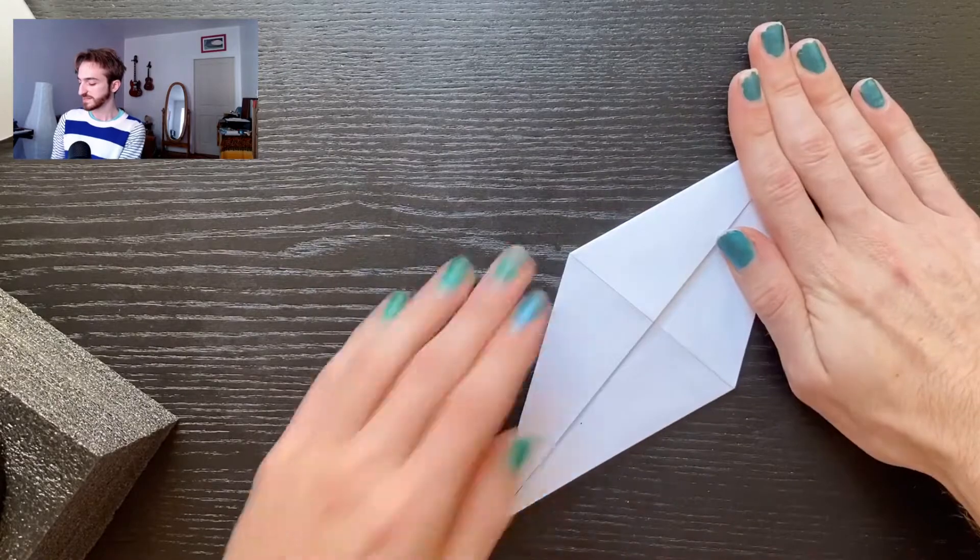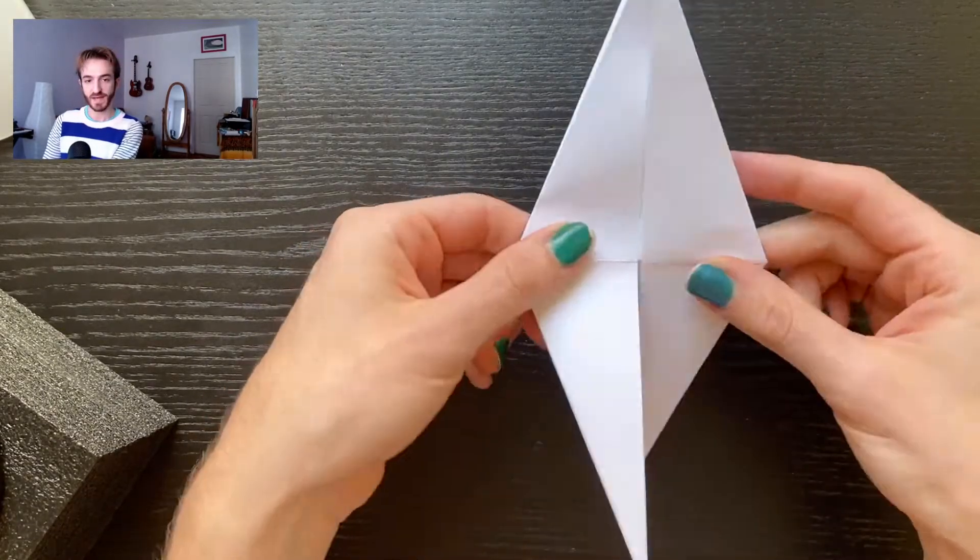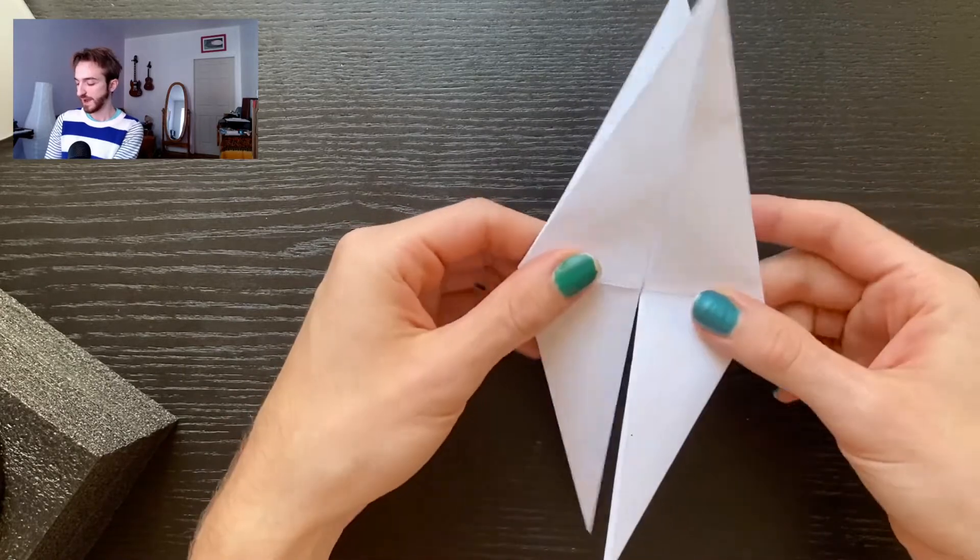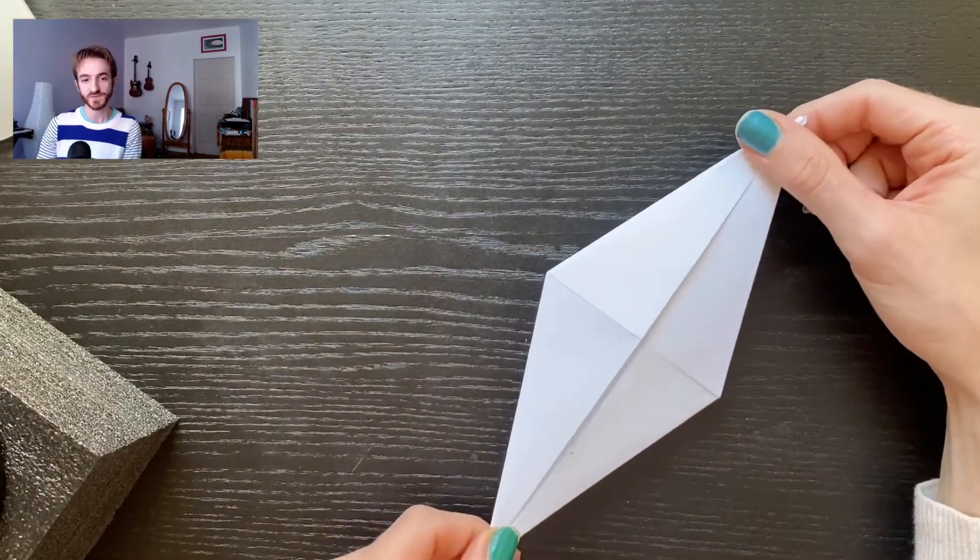Alright. This is called the bird base. There's a couple different birds you can make from here. It sort of has this little flappy leg thing at the bottom. We're going to make the peace crane. This is really the only thing I know how to do in origami, so I just do it over and over again.